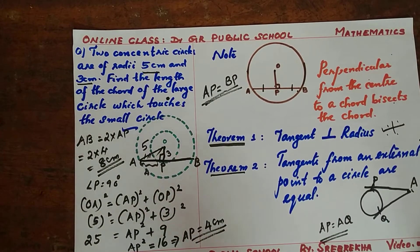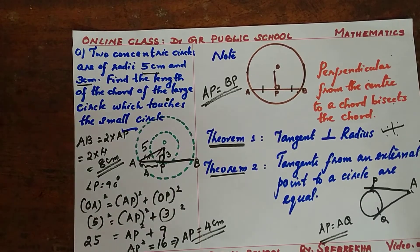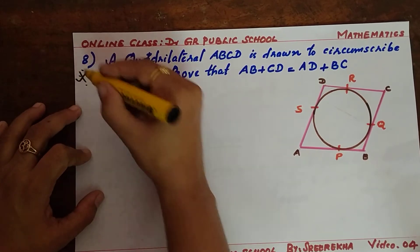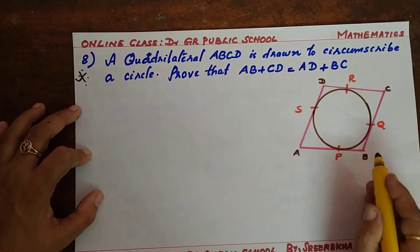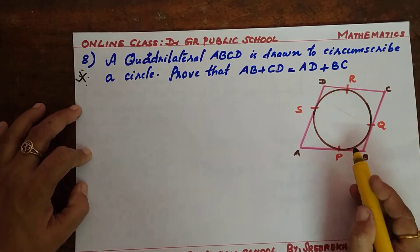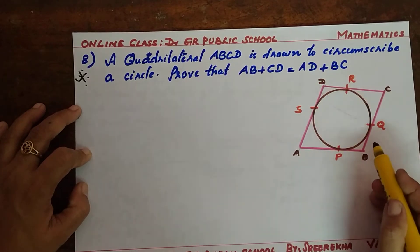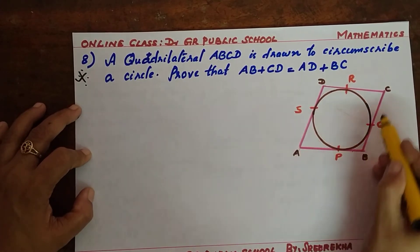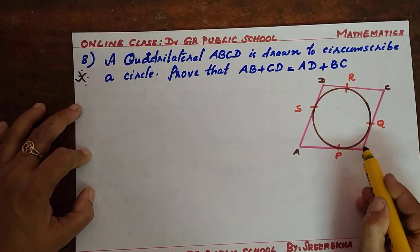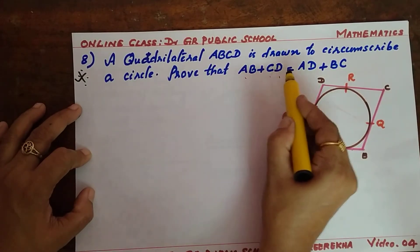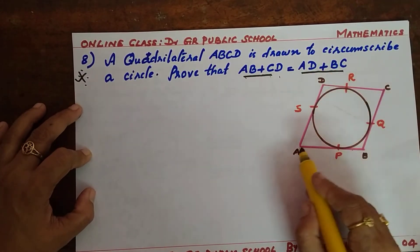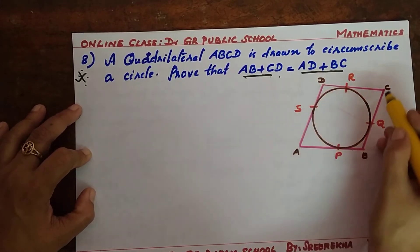The next question is textbook question number 8. It is a very important question. A quadrilateral ABCD is drawn to circumscribe a circle — meaning the circle falls inside the quadrilateral and the sides of the quadrilateral just touch the circle, acting as tangents. We need to prove that AB plus CD equals AD plus BC, that is, the sum of opposite sides are equal.